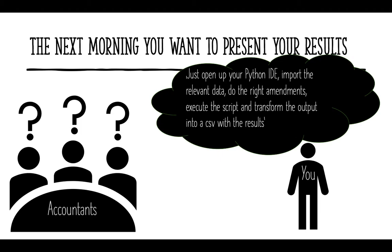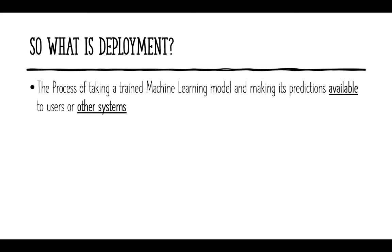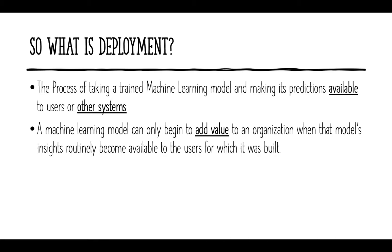And the accountants are like: no idea what this guy is talking about. And with this story you already understand what deployment is about. So what is deployment? It is the process of taking a trained machine learning model and making its predictions available to users or other systems. Of course the accountants have to work with your model, and you can't just give them your script — that doesn't work in reality. You have to provide it in a way that they can use it, for example a user interface. Your script should also run on other systems and in other programming languages. That is where you need deployment.